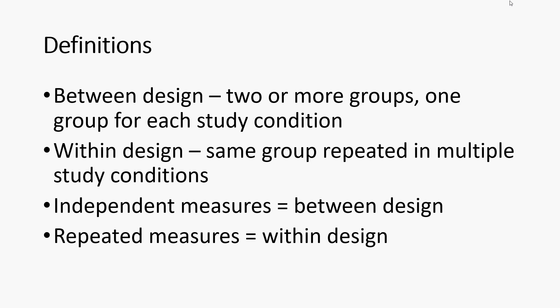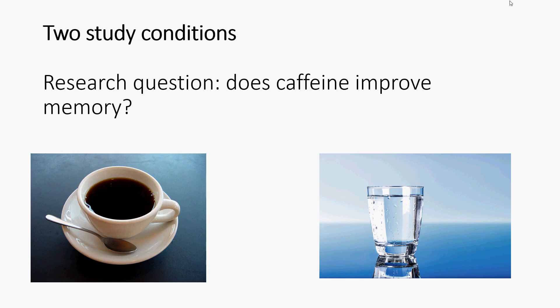Be aware that different terminology is sometimes used. Between groups design is also referred to as independent measures — that's two or more groups, one for each unique study condition. Repeated measures is the same as within groups design, where you've got the same group allocated to all of the conditions.